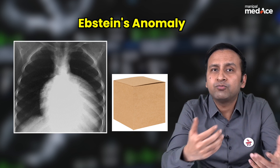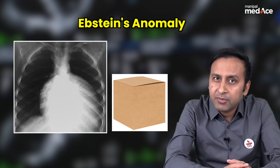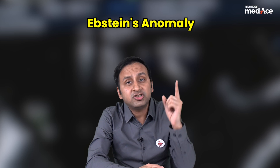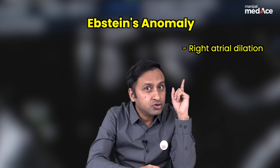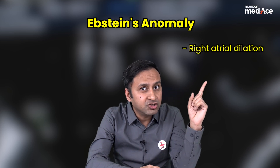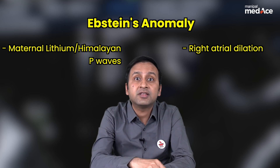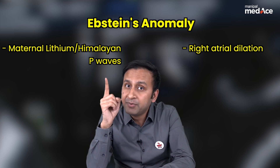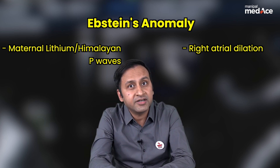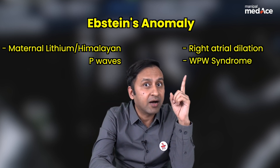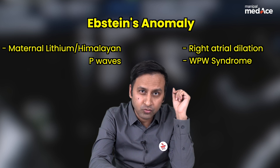Some important points to remember about Ebstein's anomaly: the box-shaped appearance occurs due to abnormal dilatation of the right atrium. It is associated with maternal lithium intake, with Himalayan P waves on EKG, and also with Wolff-Parkinson-White syndrome.